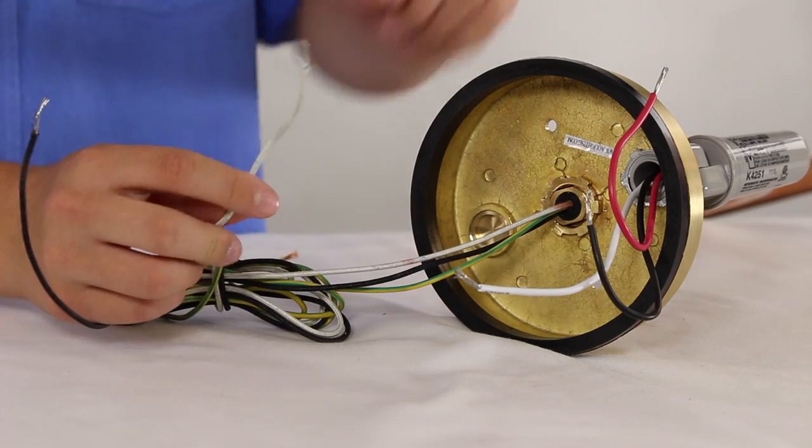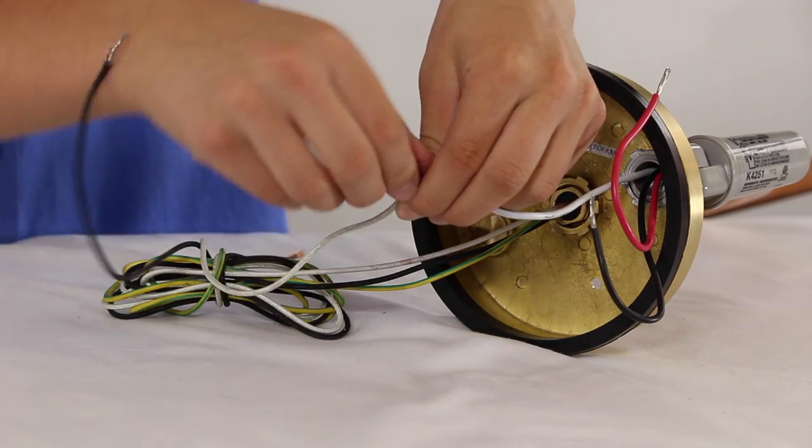Start by taking the neutral white wire from the gooseneck and the neutral white wire from the accessory and twist together.